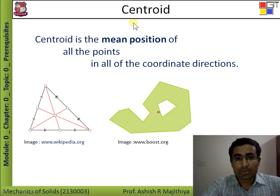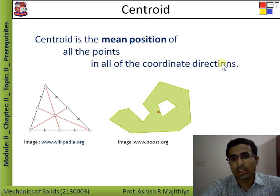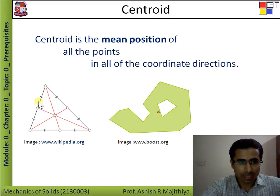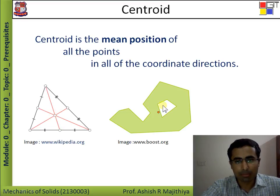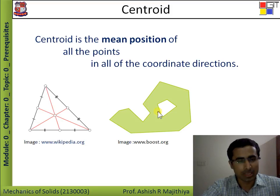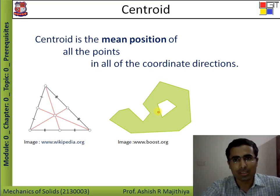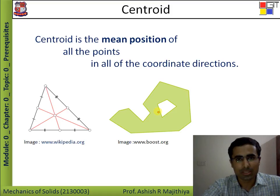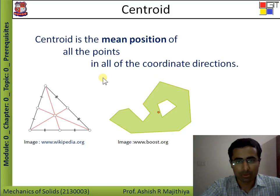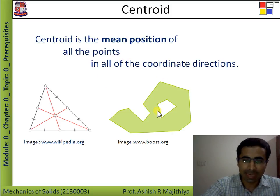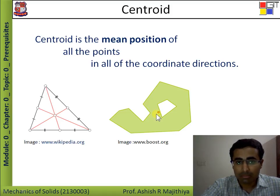The next concept is centroid. Centroid is the mean position of all the points in all coordinate directions. Two 2D examples are shown here — in this triangle, this point is the centroid, which is a regular shape. The second example is an irregular shape, and the centroid of this irregular shape is shown here. We will study this further in Module 2, which covers center of gravity and moment of inertia. The centroid can be calculated analytically or by a balancing method in physical terms.